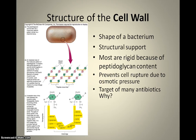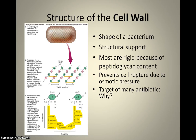The cell wall determines the shape, provides structural support, and prevents things from going into and out of the cell very easily — it's a rigid structure. It is a series of polysaccharides connected by peptide or amino acid bridges that keep it very rigid. It is also a target of many antibiotics, because it is unique to bacteria. When we're developing drugs, we're always looking for something unique to bacteria that we don't have, so that if we administer the drug, it's not going to harm us.